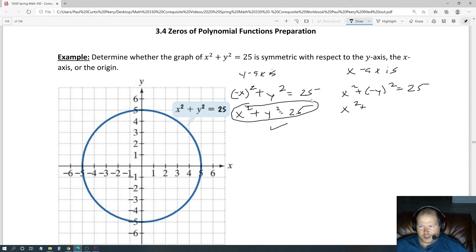And that gives me a negative y times negative y, which is y squared, positive y squared, equals 25. And then that also works.